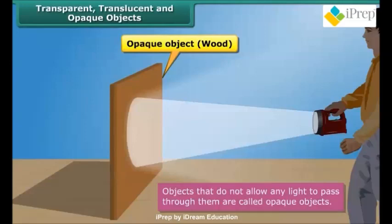When light falls on an opaque object, its shadow is formed on the other side of it. Wood, sheets of metal, dark colored plastics, rocks, etc. are examples of opaque objects.